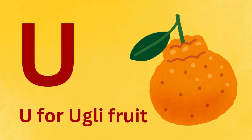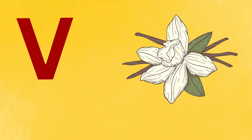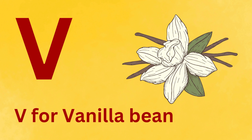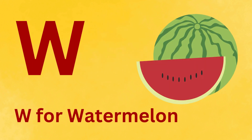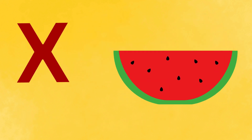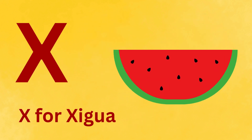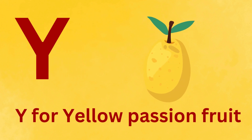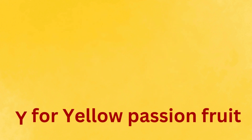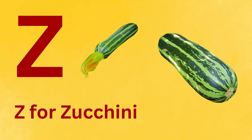U. U for ugly fruit. V. V for vanilla bean. W. W for watermelon. X. X for iguazu. Y. Y for yellow passion fruit. Z. Z for zucchini.